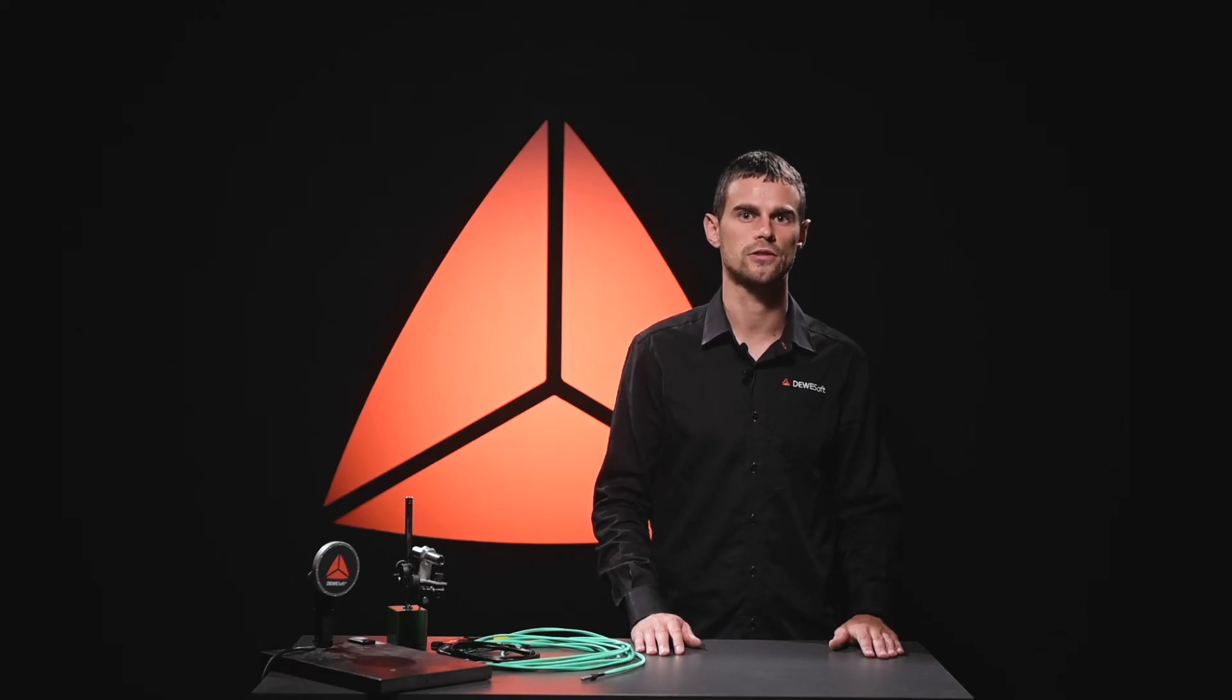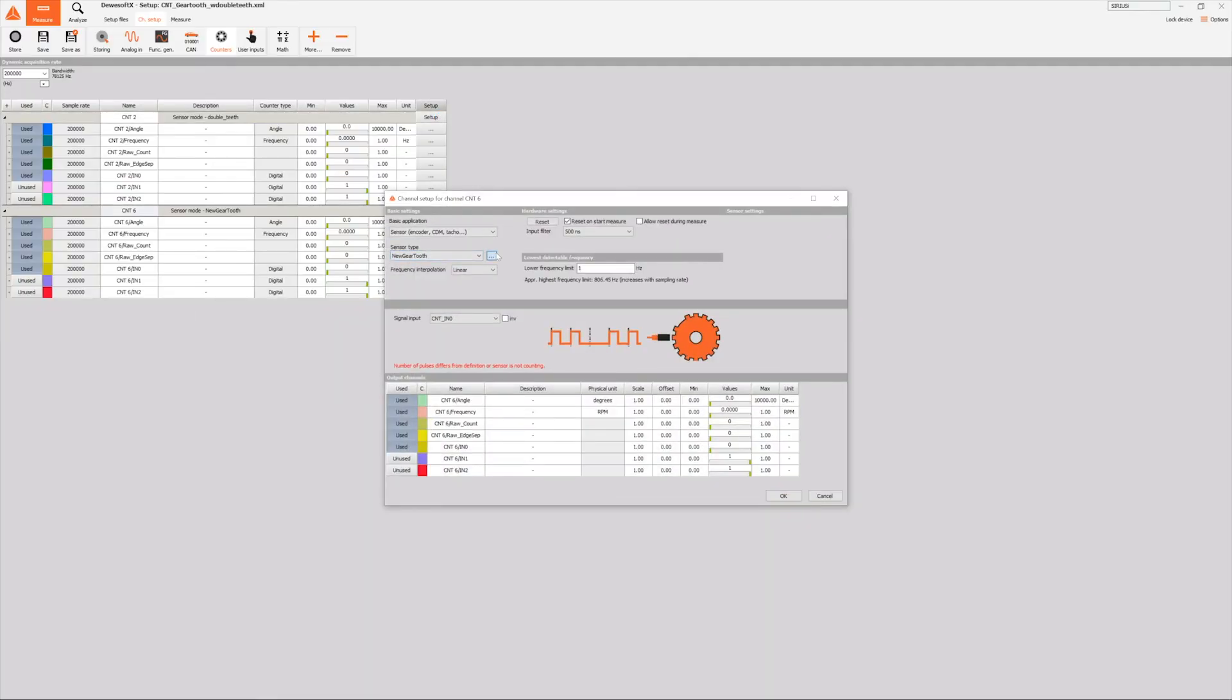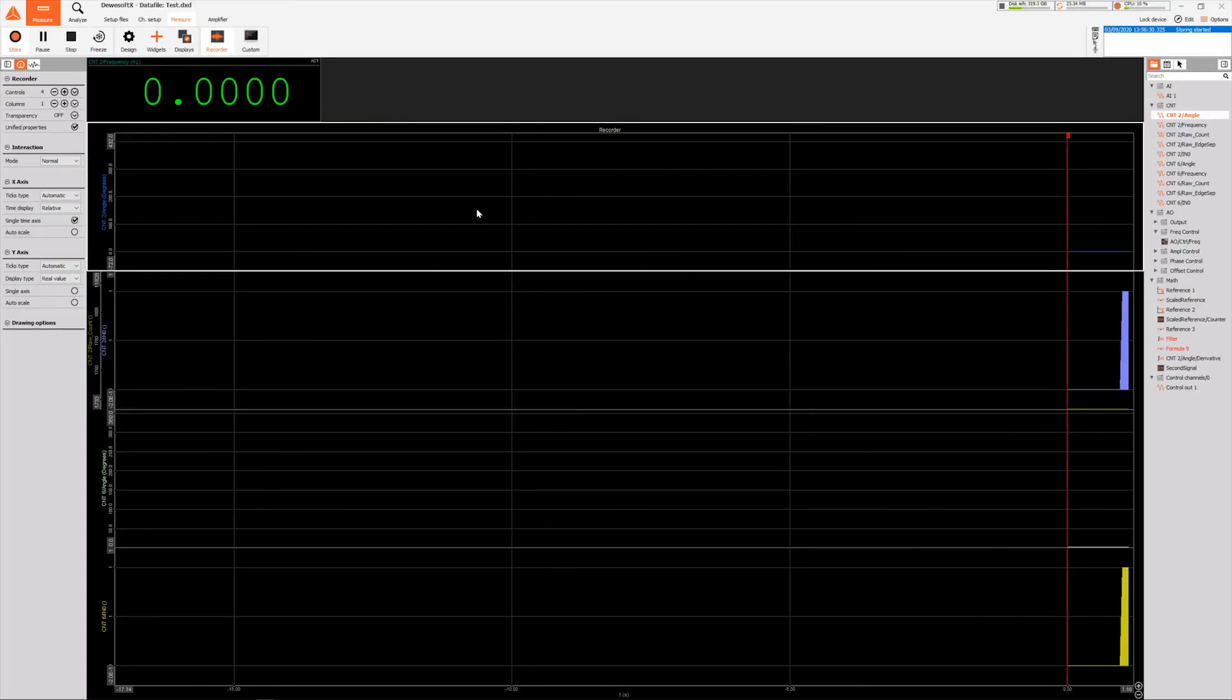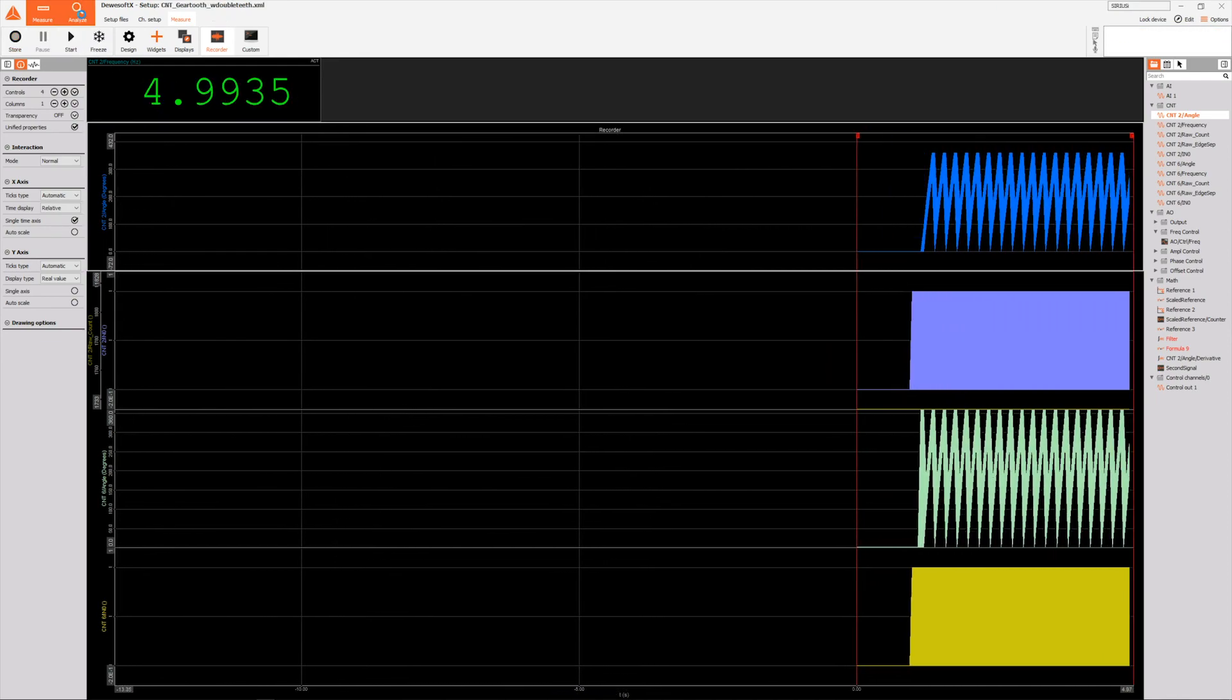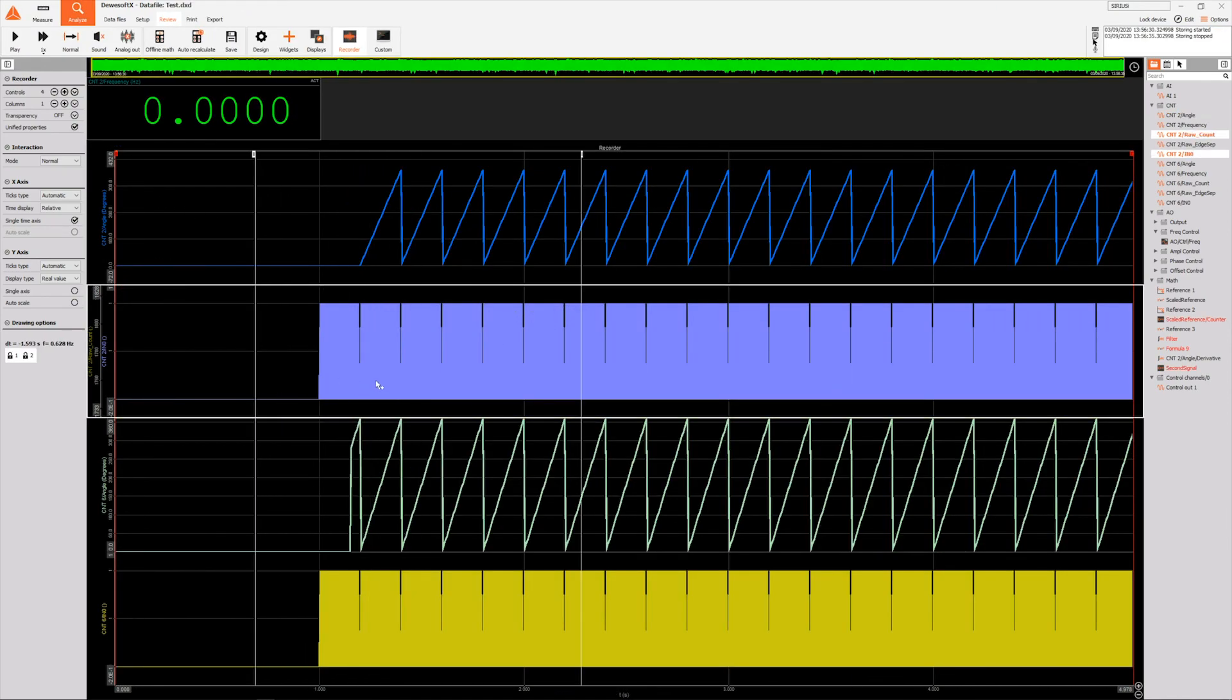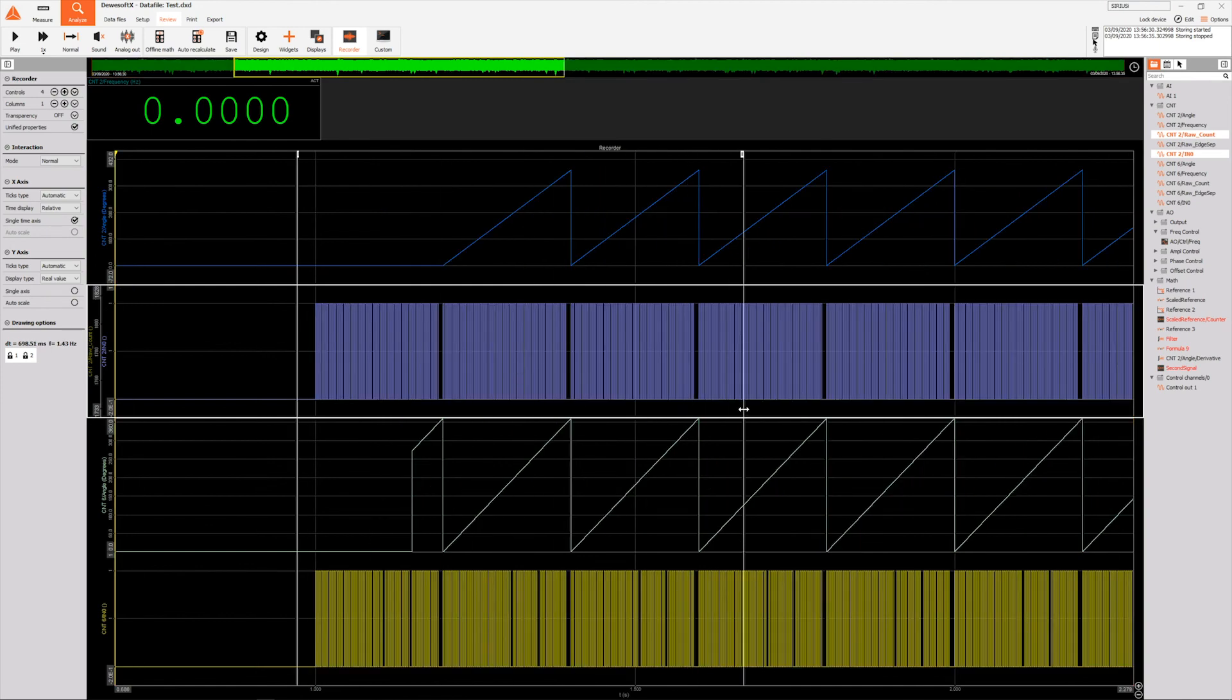As you can see, the sensor starts measuring the signal immediately after reaching the second gap between the teeth. We see that the gear-tooth not only works, but it works better than before, because the counter starts working after hitting the second gap. Before, we needed to make a whole rotation to get the correct position of the sensor.